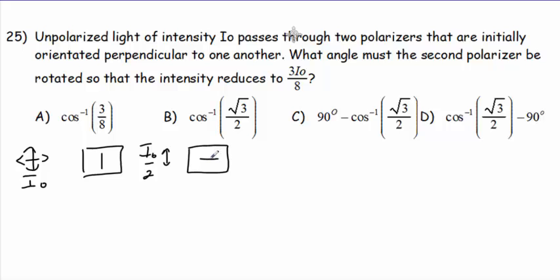So if we rotate this axis by, say, alpha, then the angle between the two axes would be theta here, which would be 90 minus alpha.